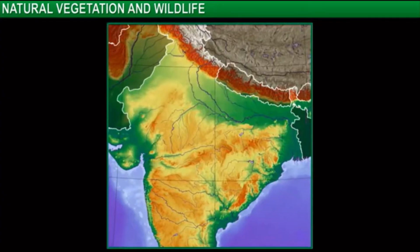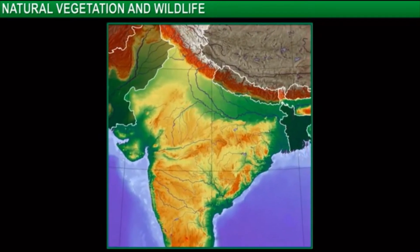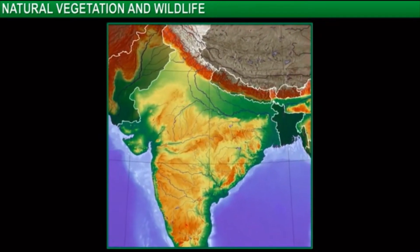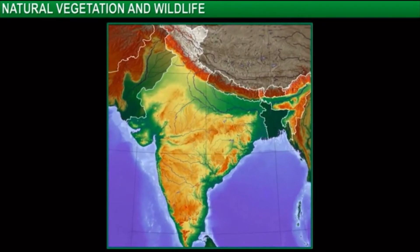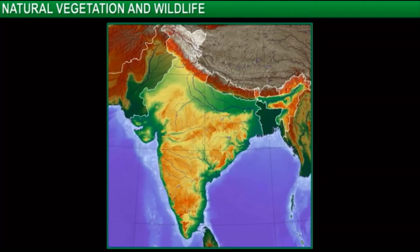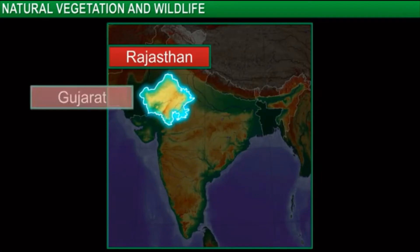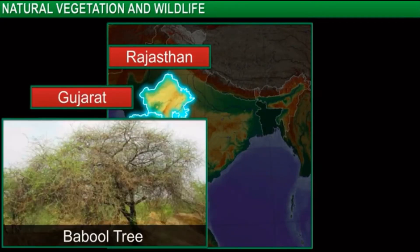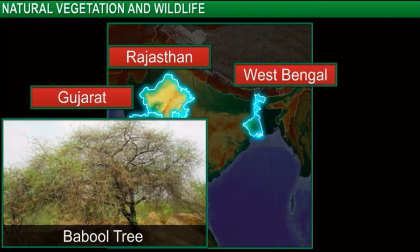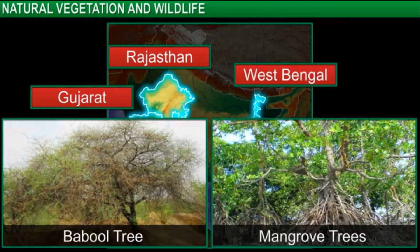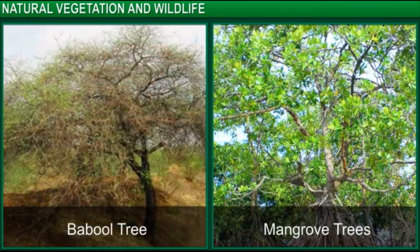If you travel in India from one region to another, you will notice a change in the type of vegetation. For example, in the desert areas of western India like Rajasthan and Gujarat, you will find an abundance of babool trees. On the other hand, as you move towards eastern India — say, to West Bengal — the type of vegetation you see is very different. The natural vegetation in the delta region of West Bengal consists of mangrove trees, which look nothing like the babool trees.